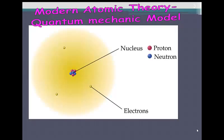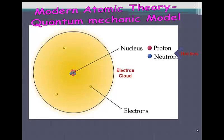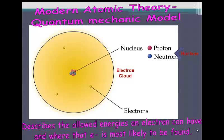In the quantum mechanic model, the nucleus, which consists of protons and neutrons, are surrounded by an electron cloud, basically a place where the electrons are constantly buzzing around or constantly moving in. The clouds describe the energies that an electron can have and where that electron is most likely to be found.